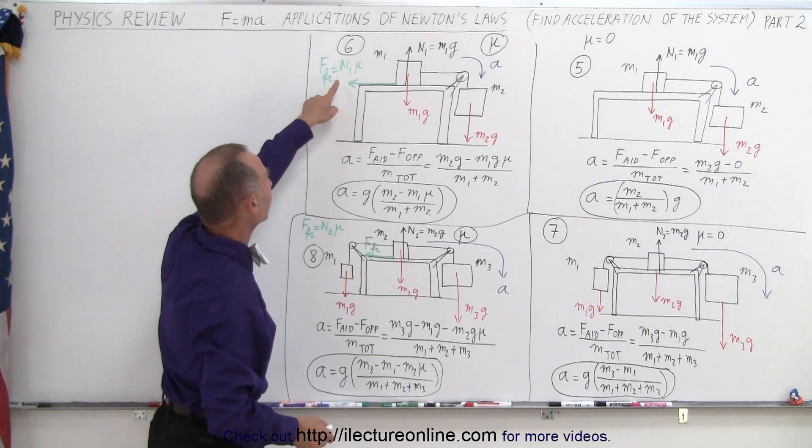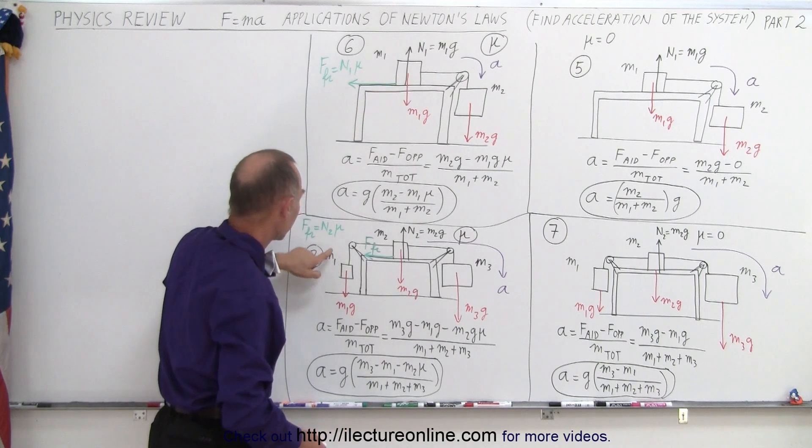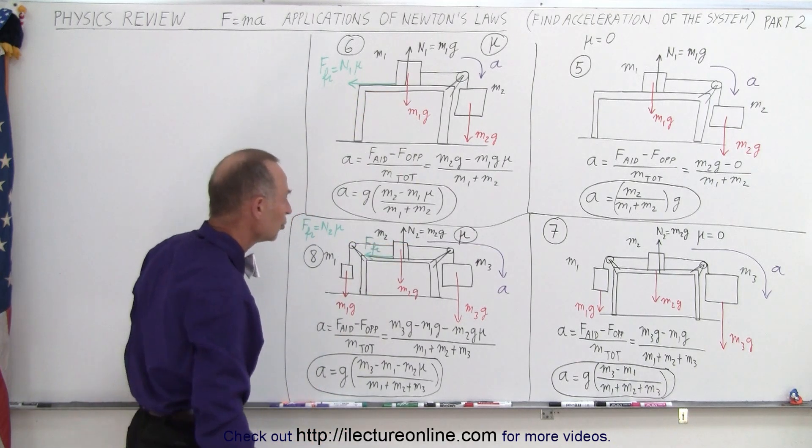And notice that the definition of the friction is equal to the normal force times mu. In this case, the normal force is M1g. Here, the normal force is M2g.